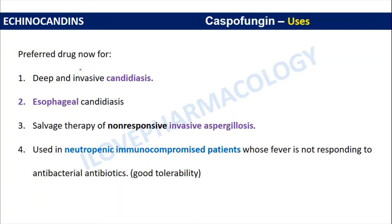The uses of caspofungin include: it is the preferred drug for treatment of deep and invasive candidiasis, esophageal candidiasis, as salvage therapy for non-responsive invasive aspergillosis, and in neutropenic immunocompromised patients whose fever is not responding to antibacterial antibiotics. It is preferred in neutropenic patients because of its good tolerability.